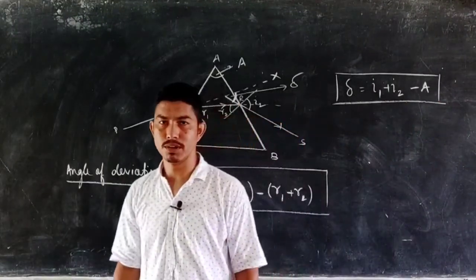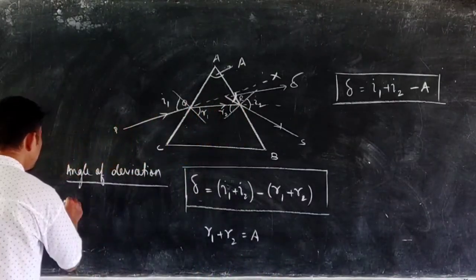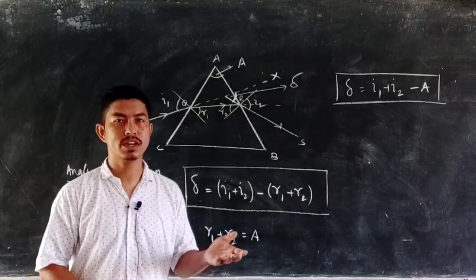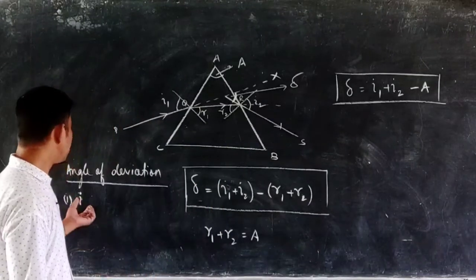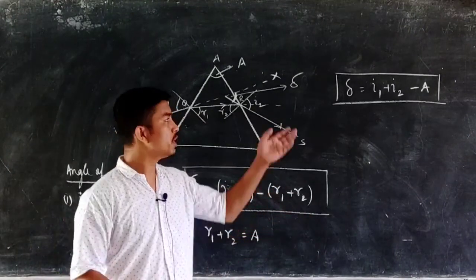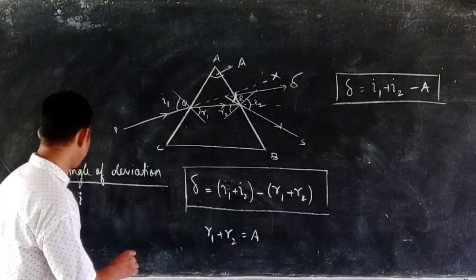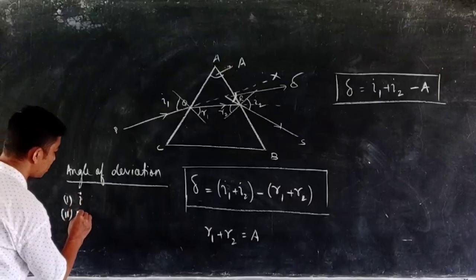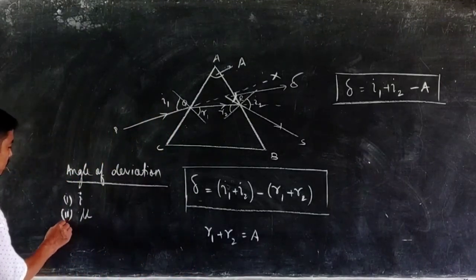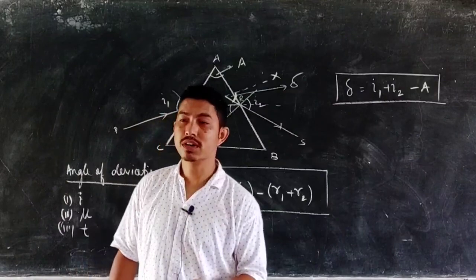The factors on which the angle of deviation depends: first, the angle of incidence I — but it depends anomalously. Initially when the angle of incidence increases, the angle of deviation decreases, and for a certain value of I, we have the minimum angle of deviation. On further increasing, the angle of deviation starts increasing again. Second, it also depends upon the refractive index of the glass — higher the refractive index, more will be the angle of deviation. It also depends upon other factors like temperature T.